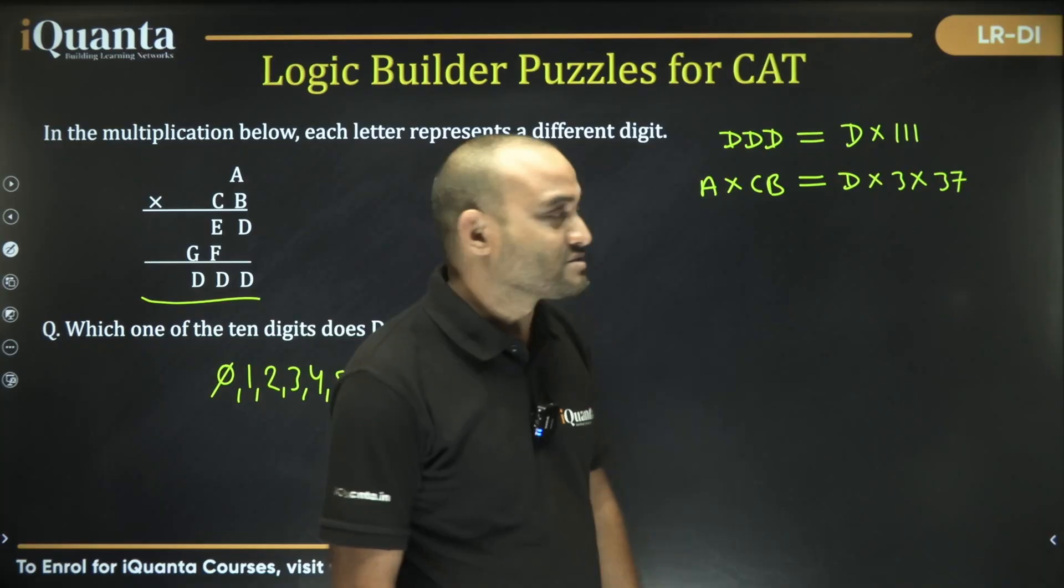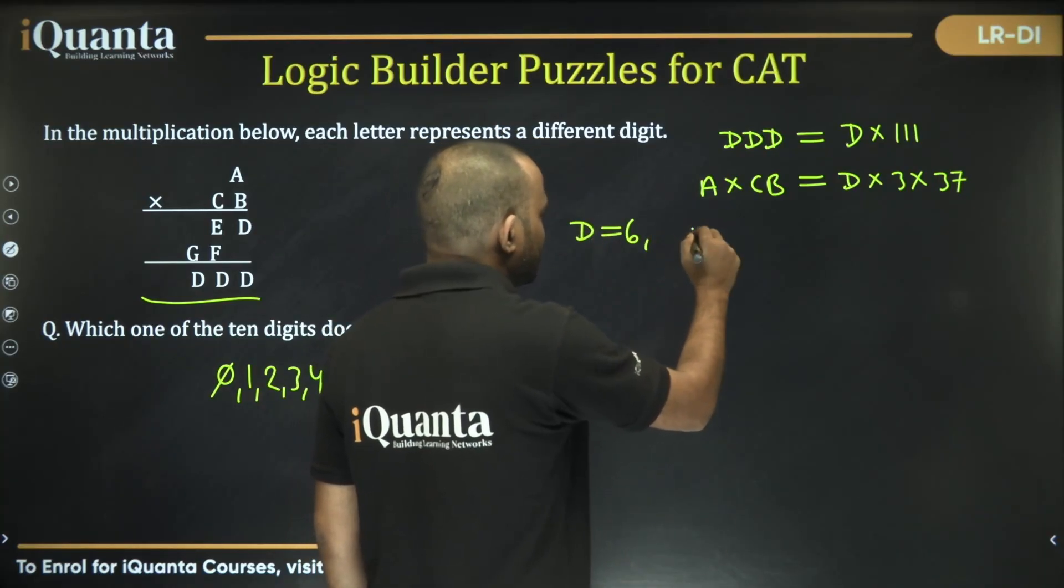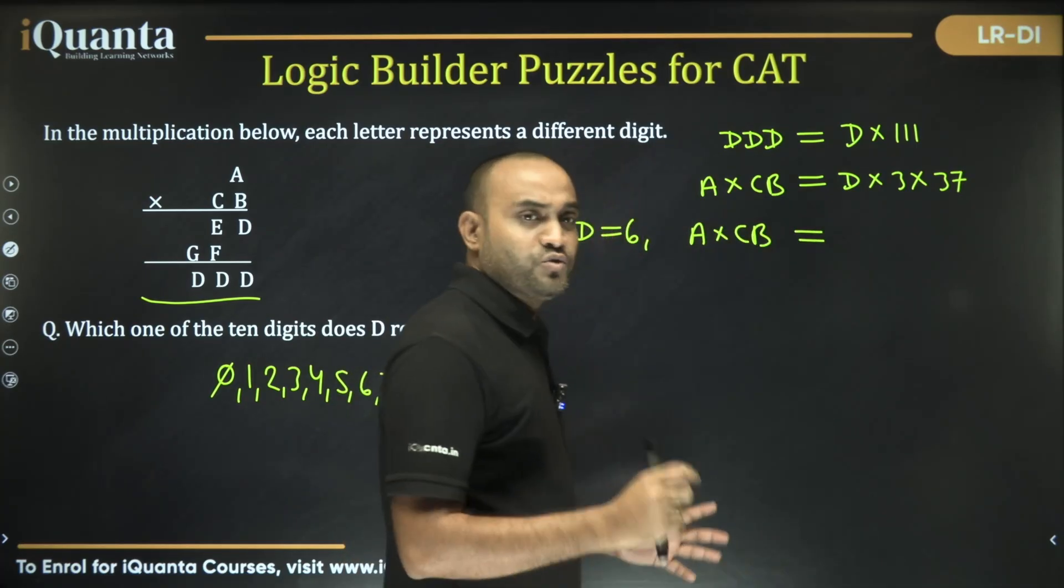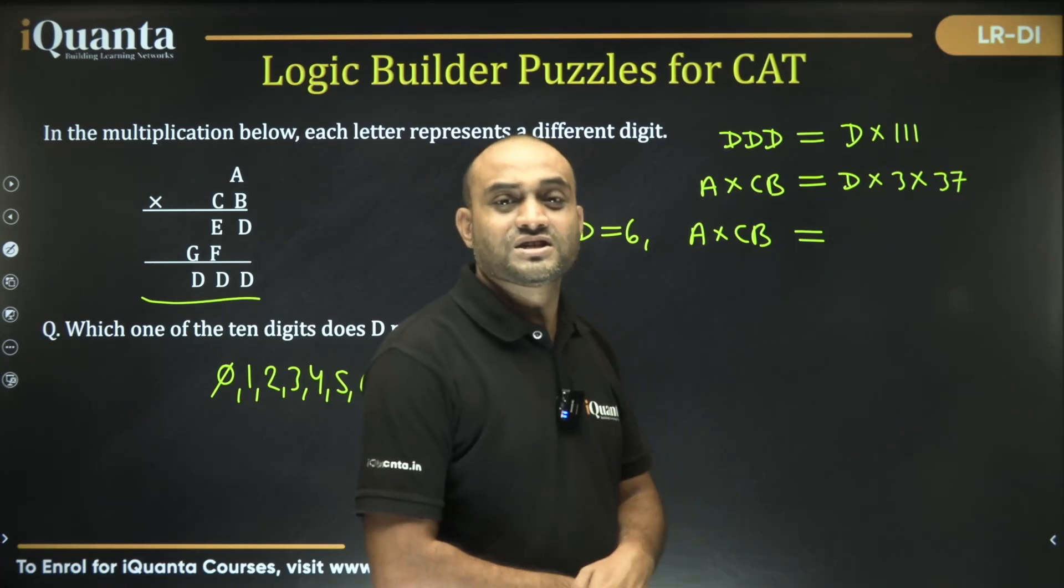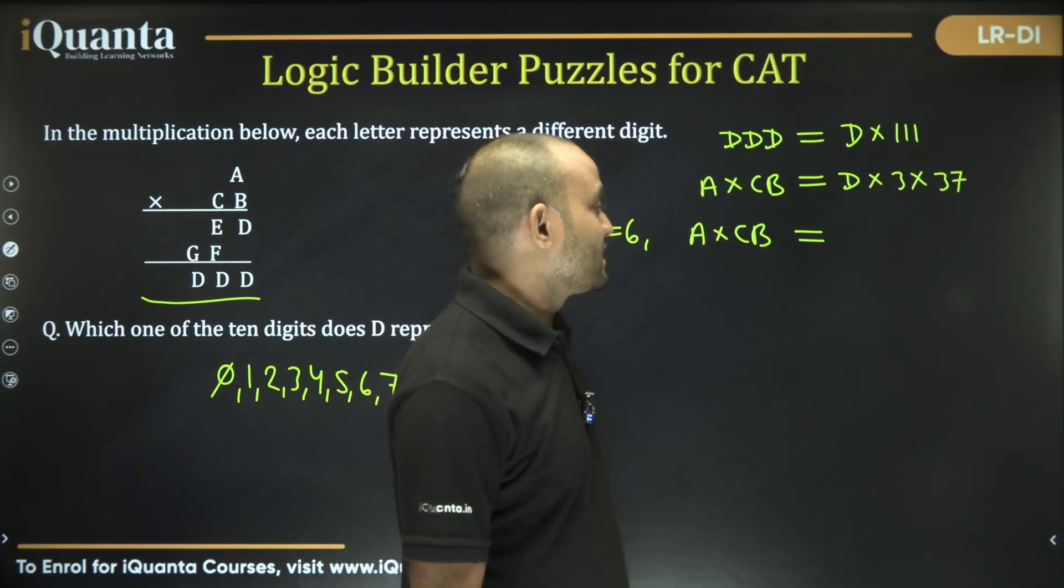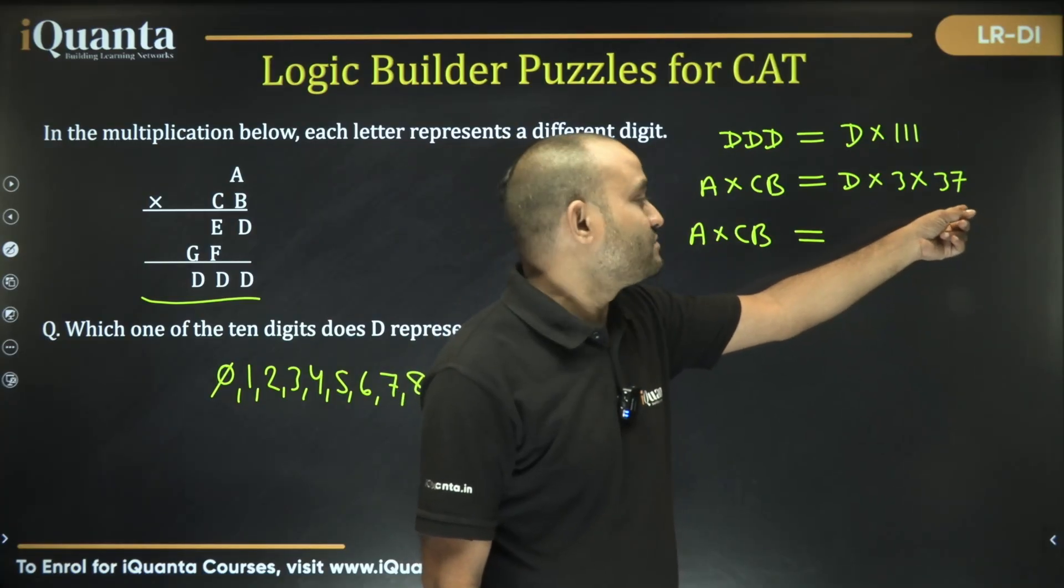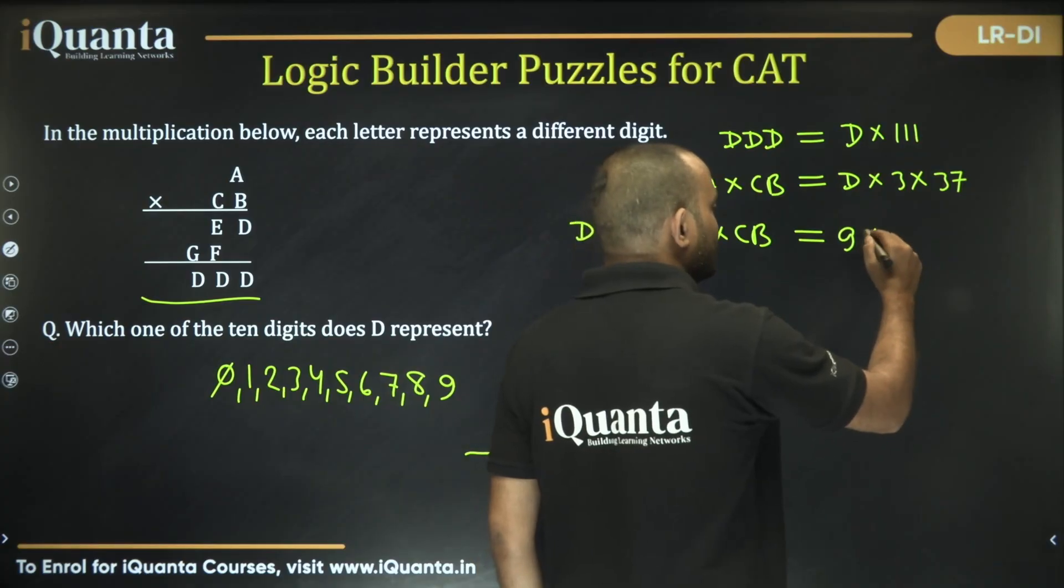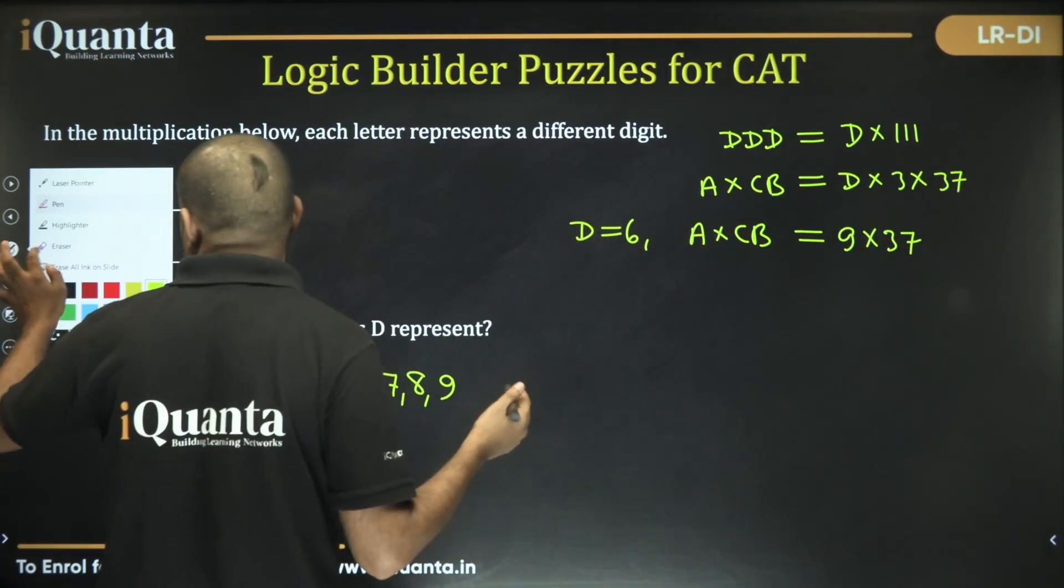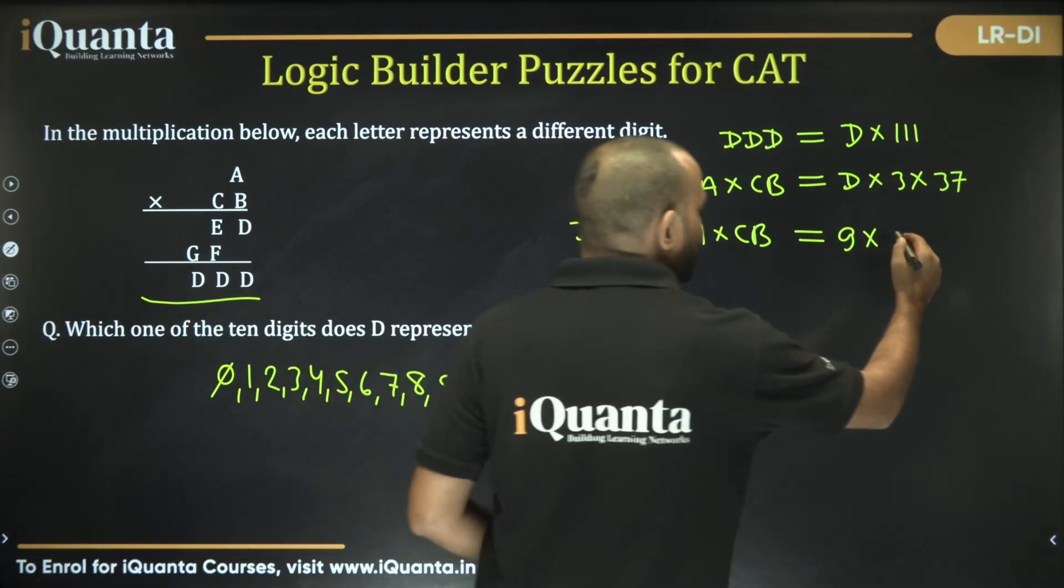Can I take D is equal to 6? If I am taking D is equal to 6, can I say A into CB will become—how do you distribute D into these two numbers such that one of the number is two-digit and the other is a single-digit? So 6, I can bring 2 to here and 3 here, so this will become 9 into 74.